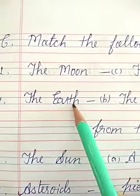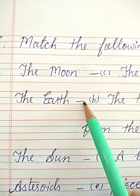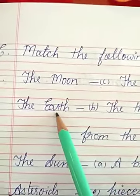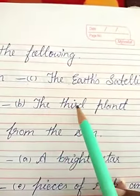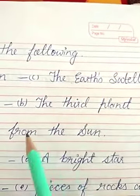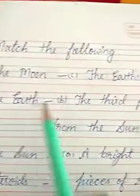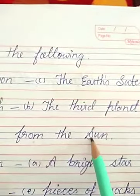Number 2 — The Earth. What is the Earth? Option B is the correct matching. The Earth is the third planet from the sun.